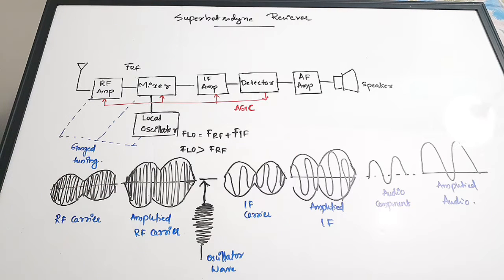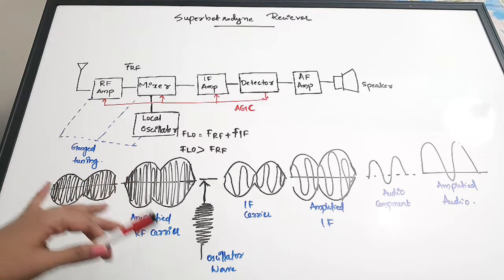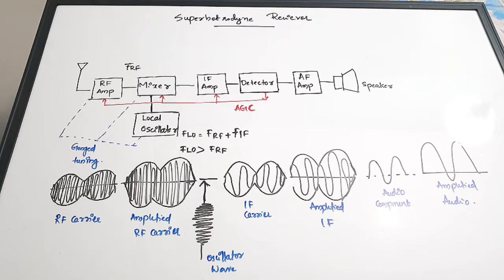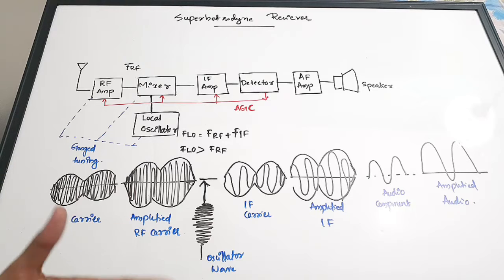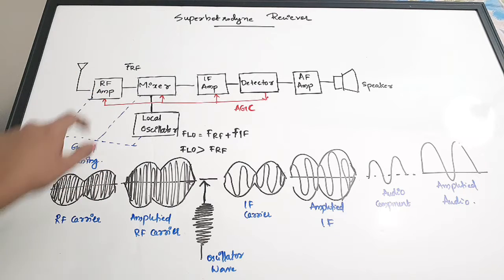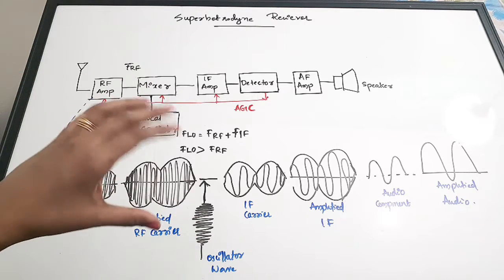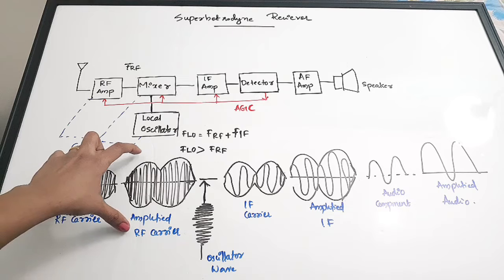Let us see the block diagram of a super heterodyne receiver. The antenna receives radio frequency waves — in communication systems we use very high frequency RF carrier waves. That wave is received by the antenna and passed to the RF amplifier, which is a low noise amplifier used for cutting out noise and amplifying the RF carrier.